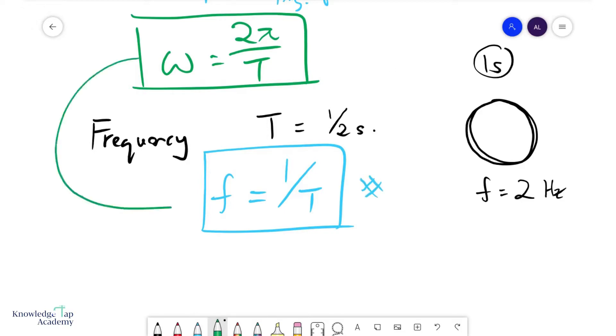And so with this in mind, combining these two, we have also omega can be represented in terms of the frequency 2πf.